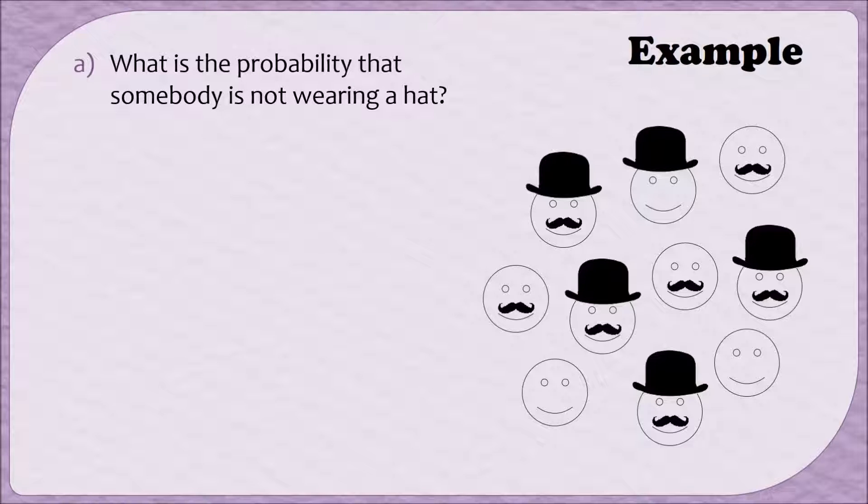First, what is the probability that somebody is not wearing a hat? To find this probability, first we have to count up how many people are not wearing a hat. Well, there are 5. So the numerator of our probability will be 5, and since there are 10 people, the denominator will be 10. 5 tenths is the same as 1 half or 0.5.